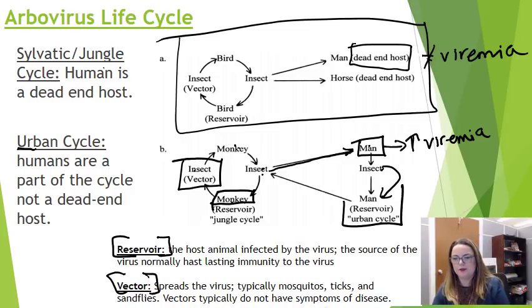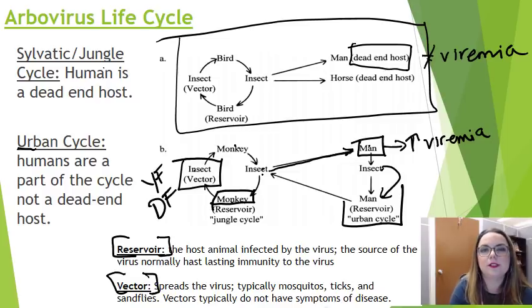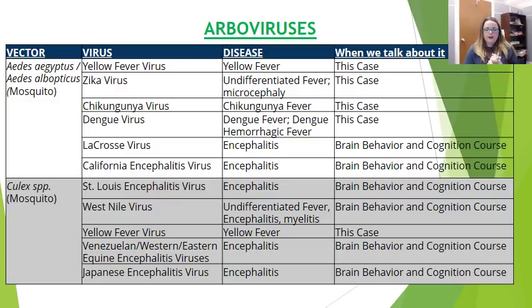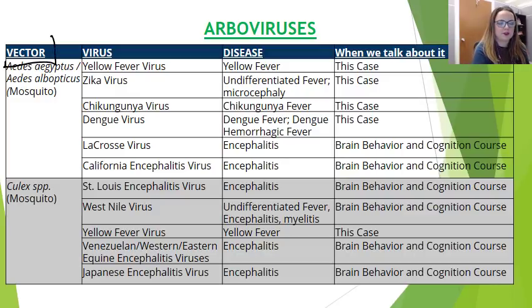Really good examples of this are yellow fever and dengue fever. Both definitely have both a jungle cycle and an urban cycle. This is a really important table — it's also in your notes. I can't stress this fact enough. You have to, have to, have to know your vectors. Vectors and reservoirs — I really want you to know these. The good thing is that the vectors are actually pretty simple on this slide.